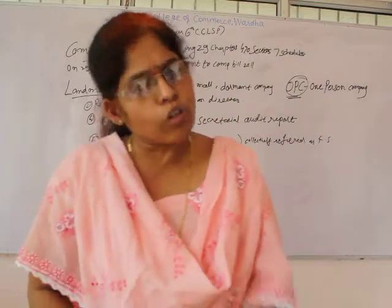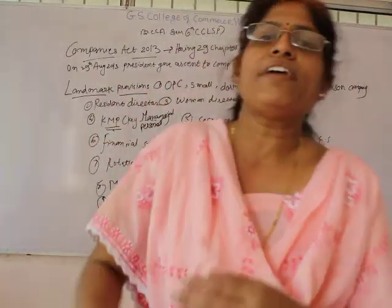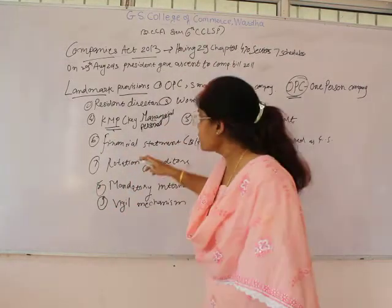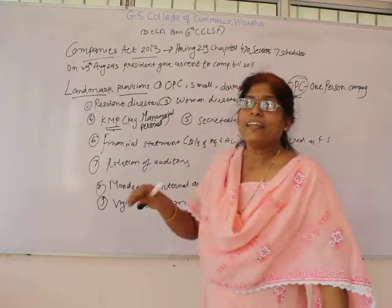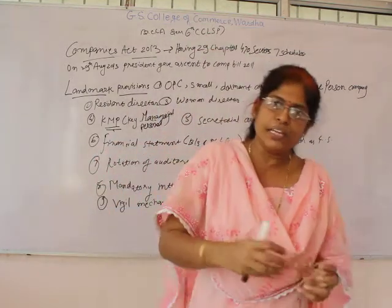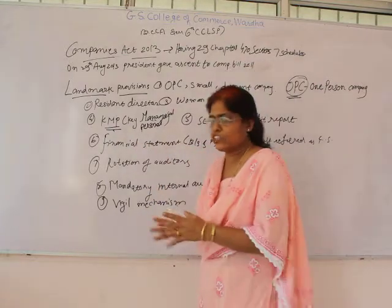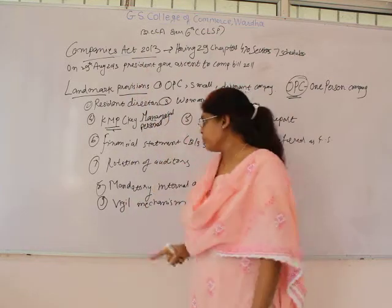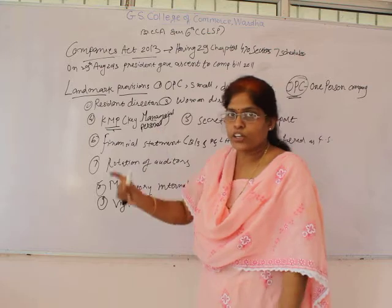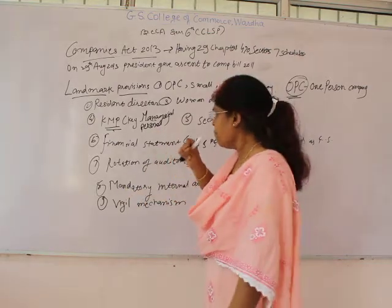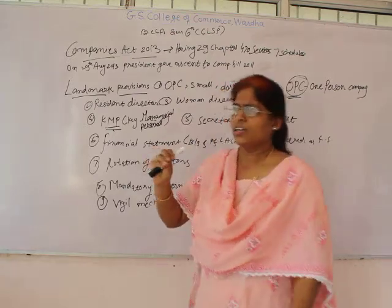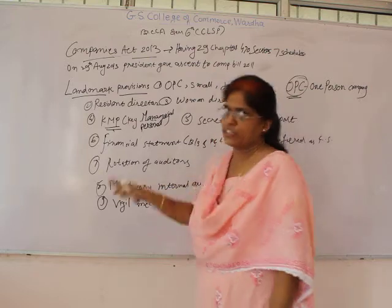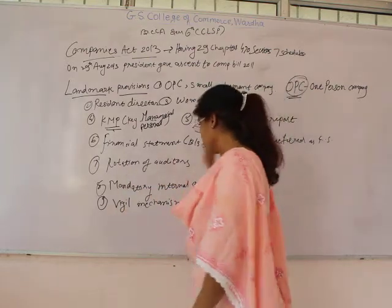The next provision is rotation of auditors. Auditors must be rotated, meaning after every five years the company must change their auditor. There was a need for this provision because companies and their auditors were making manipulations in audit reports and financial statements. The Companies Act 2013 made it compulsory to avoid fraud and any bad activities that could put the businessman into loss — hence, auditors must be changed after every five years.